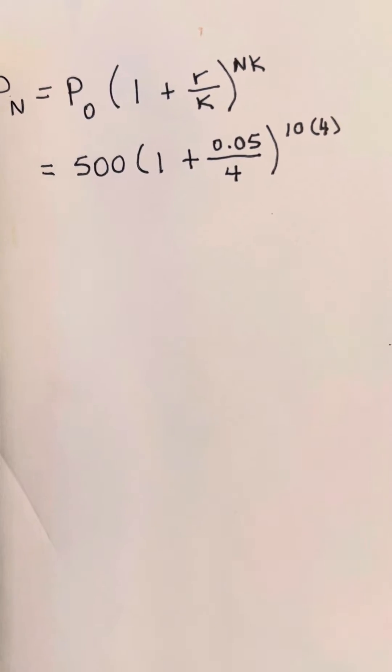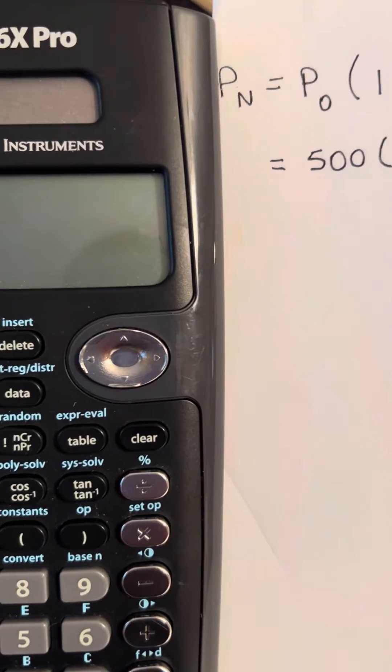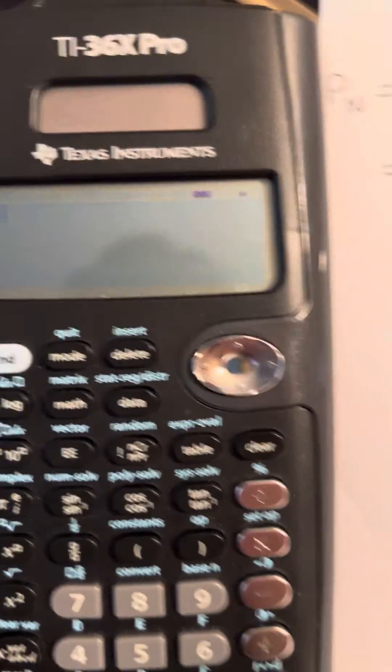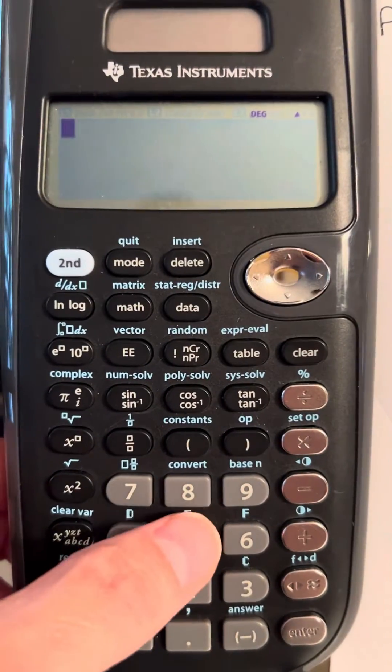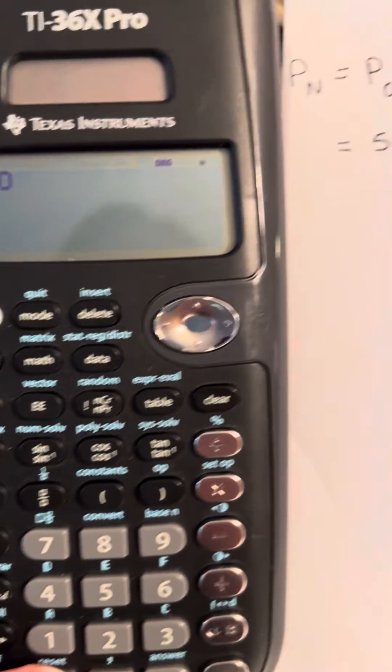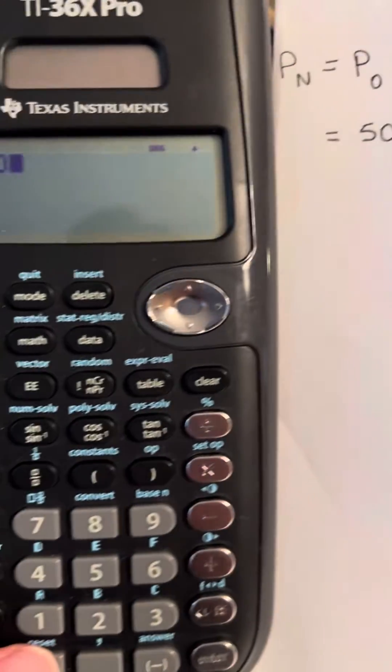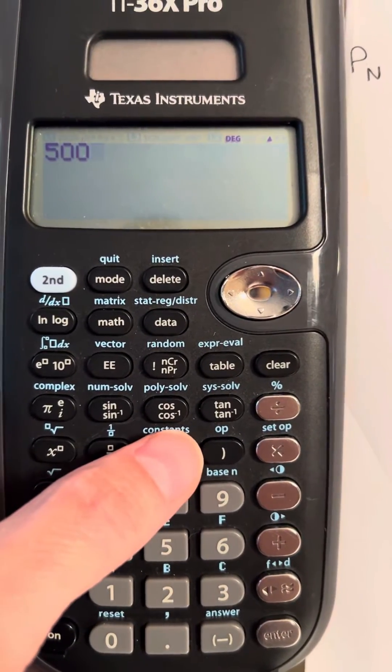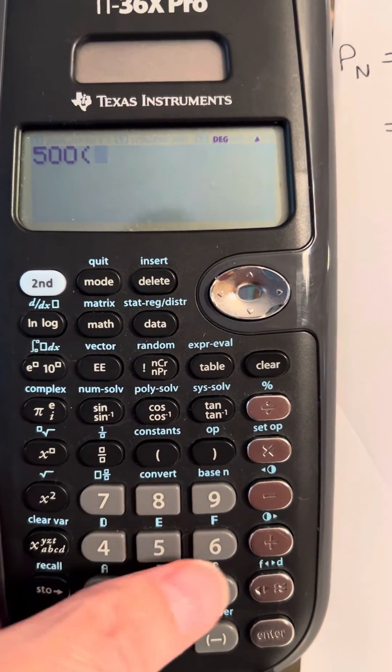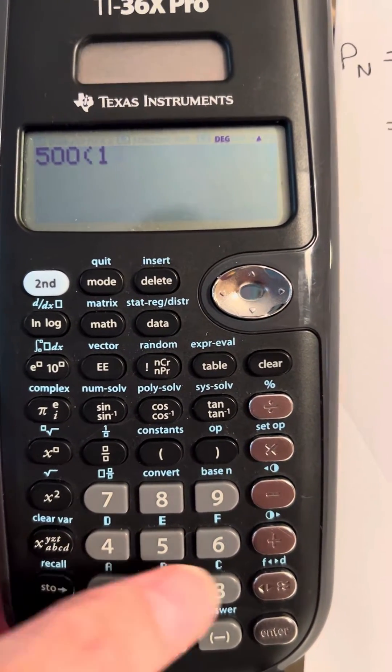To put this into the calculator, it's very straightforward, and we put in our $500. And then, to open our parentheses, here's our parentheses. So we're going to open our parentheses, and then do 1 plus.